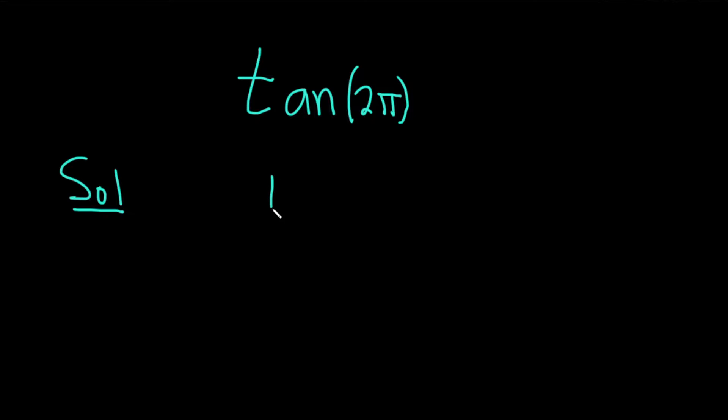First note that the tangent of x is equal to the sine of x divided by the cosine of x. So tangent of x is sine of x over cosine of x.